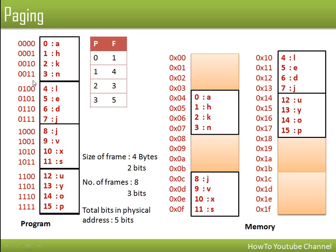In this addressing scheme, each byte has its own address. The first 2 bits of a logical address specify the page number. For example, addresses with page number 00 belong to page 0; addresses with page number 01 belong to page 1 (since 01 in binary is 1); 10 represents page 2; and 11 represents page 3. The first two bits are the page number and the last two bits are the offset inside the page.